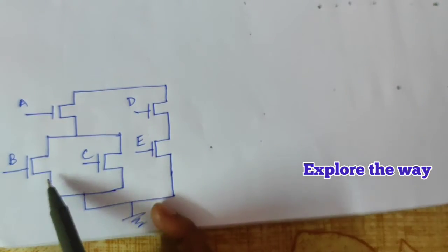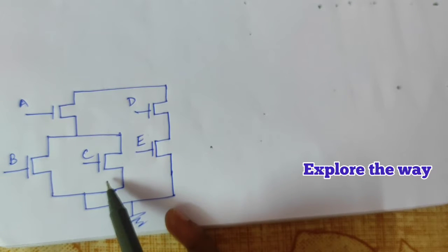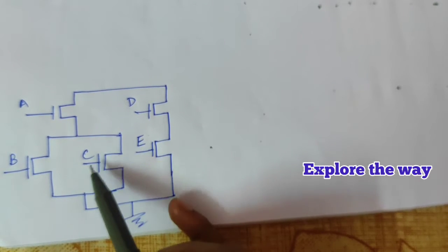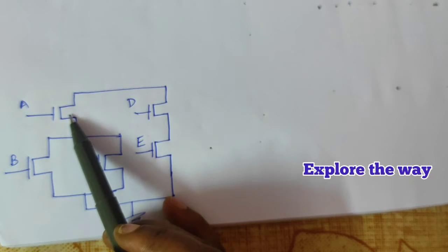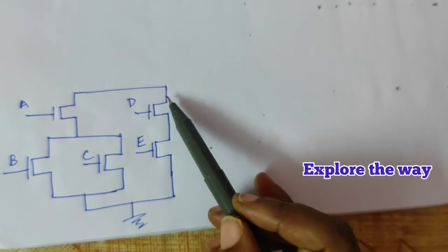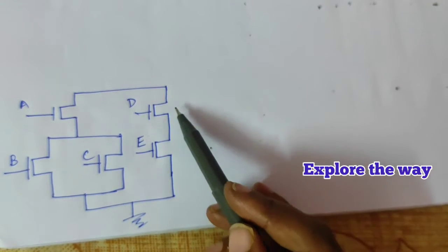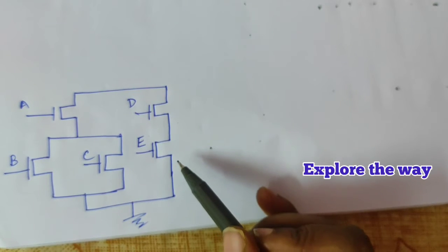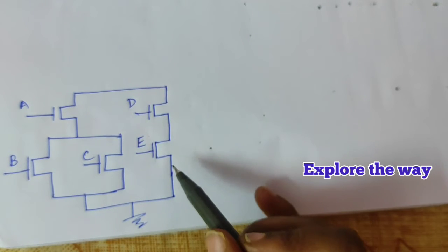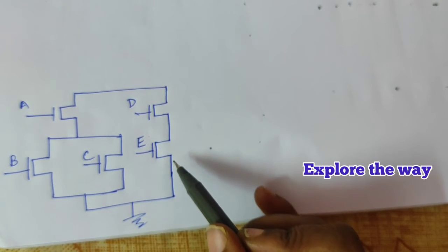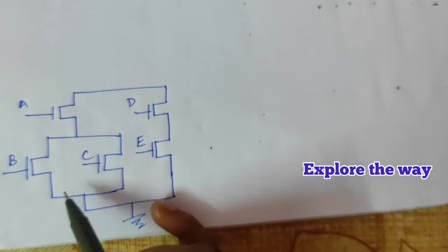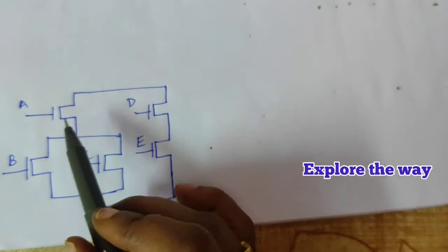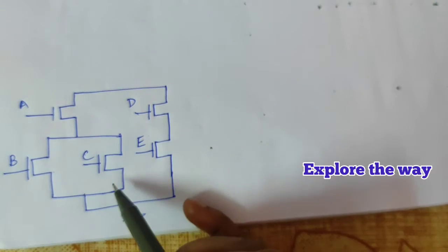So b and c are connected in parallel. Then connect a in series, giving a dot (b plus c). For d and e, between them we have a dot operation, so d and e are connected in series. Then this combination d e is connected in parallel with a dot (b plus c).